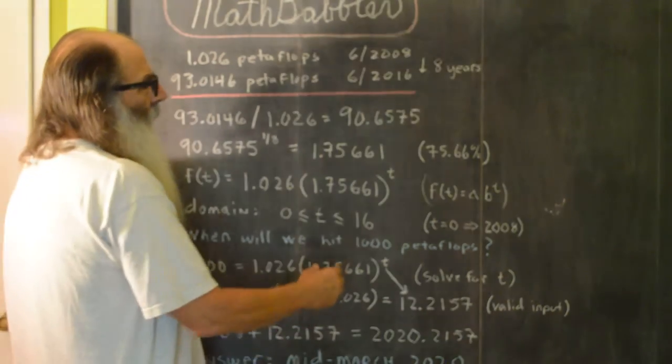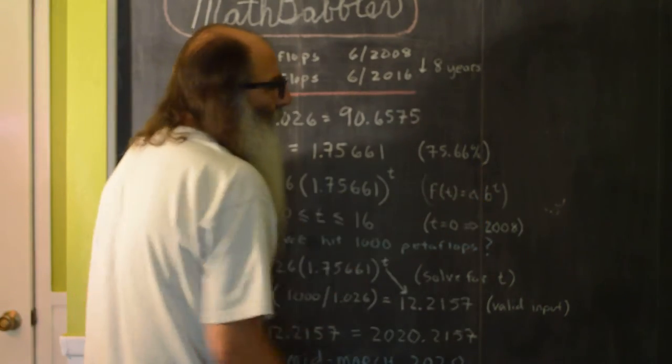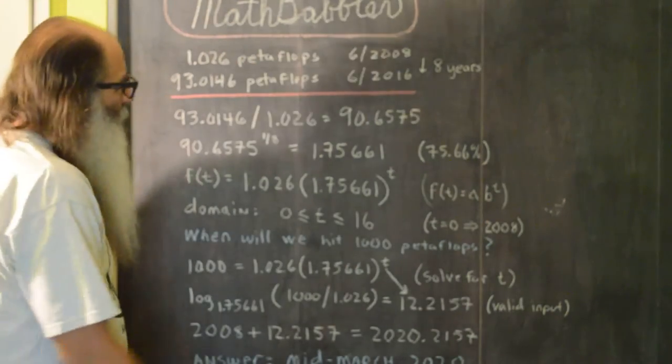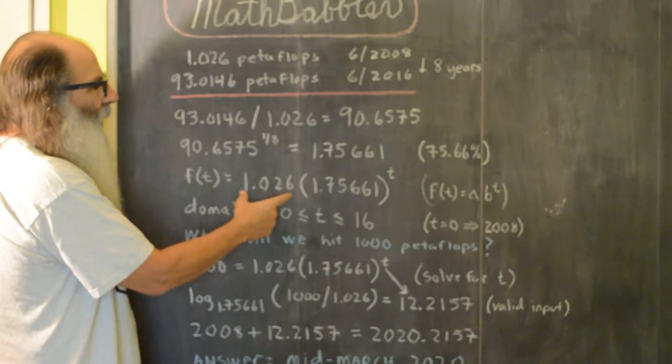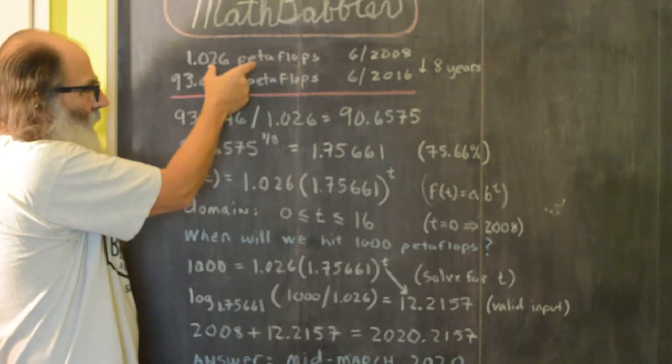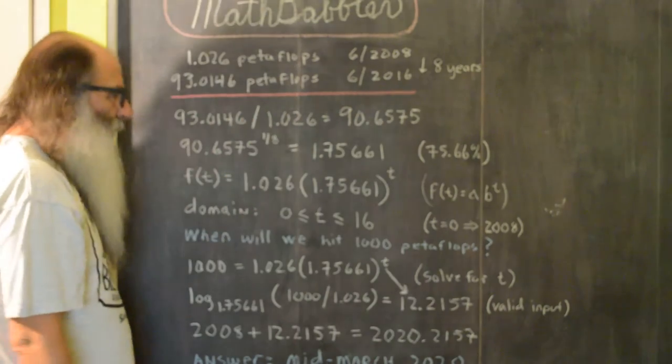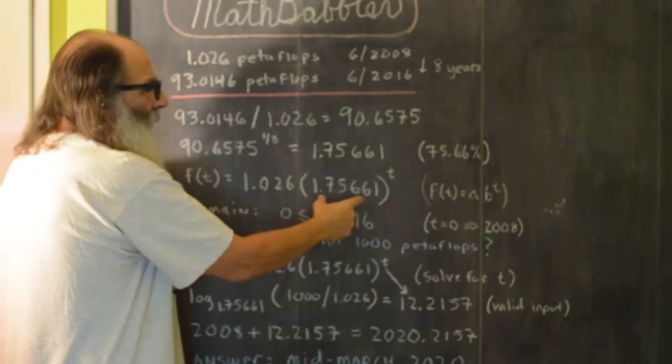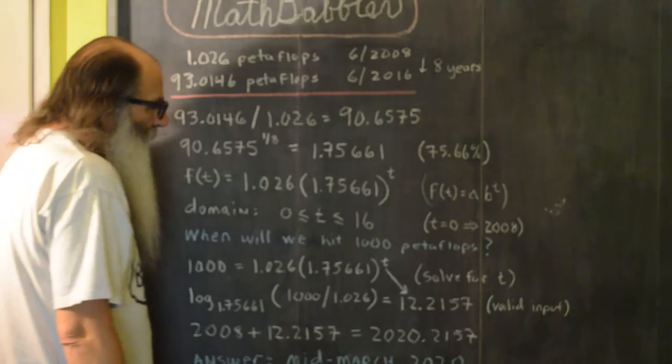So we have the two pieces of information that we need for our exponential function. So we substitute in our initial value, which was the petaflops back in 2008, substitute in our growth factor, raise it to the t power.